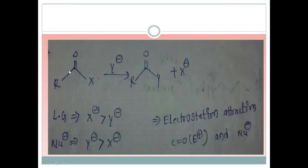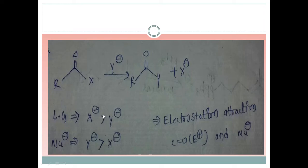This is the general equation I have taken here. There is a carbonyl group where X is the leaving group and Y is the nucleophile. Y can be attached at the place of X if Y is a better incoming nucleophile and X is a better leaving group. Then only this reaction can proceed properly and we get this as a product. X should be preferable as a leaving group, and Y is less preferable as a leaving group but better as a nucleophile compared to X.